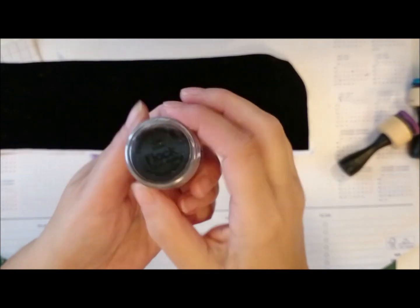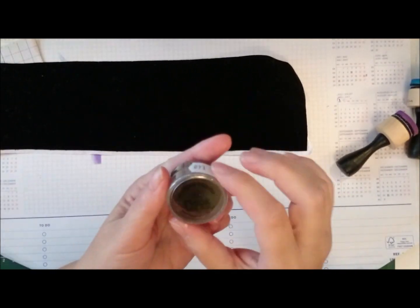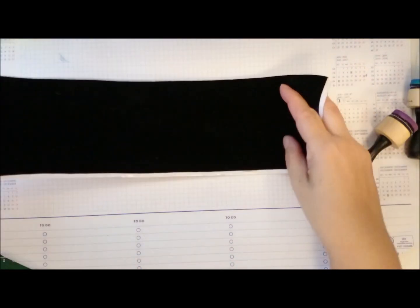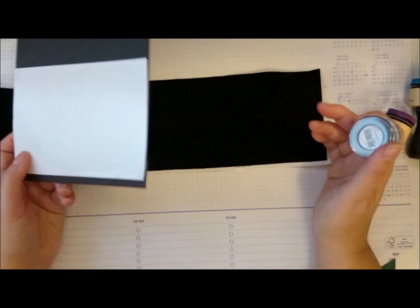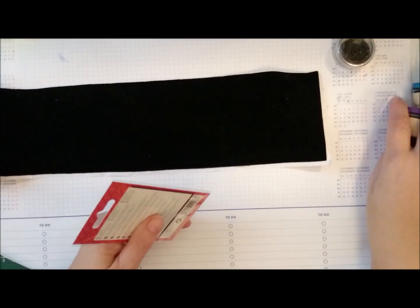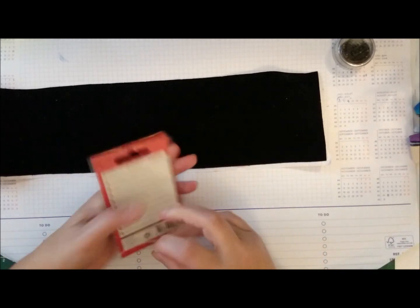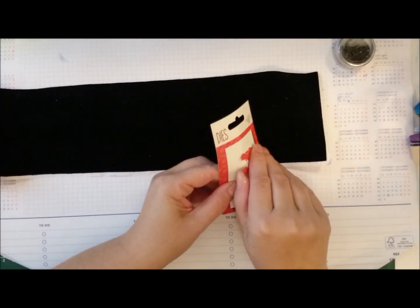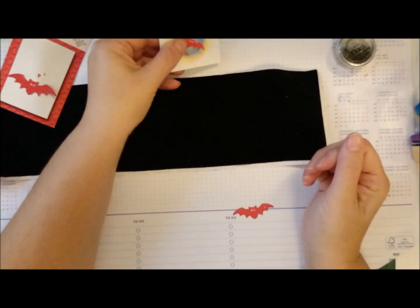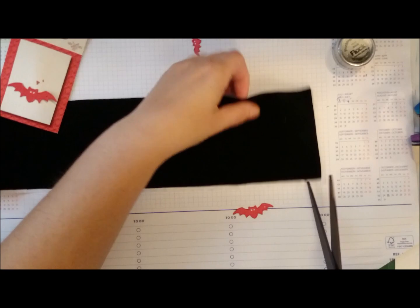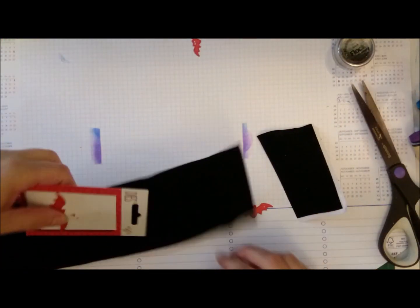So for my bats I have this contact paper or vinyl and flocking powder. The vinyl is like a suede or a velvet but it's sticky. And I also prepared some cardstock with double-sided tape on both sides, so one side to stick it down and one side to take the flocking powder. And I'm only going to use the two smallest bats.